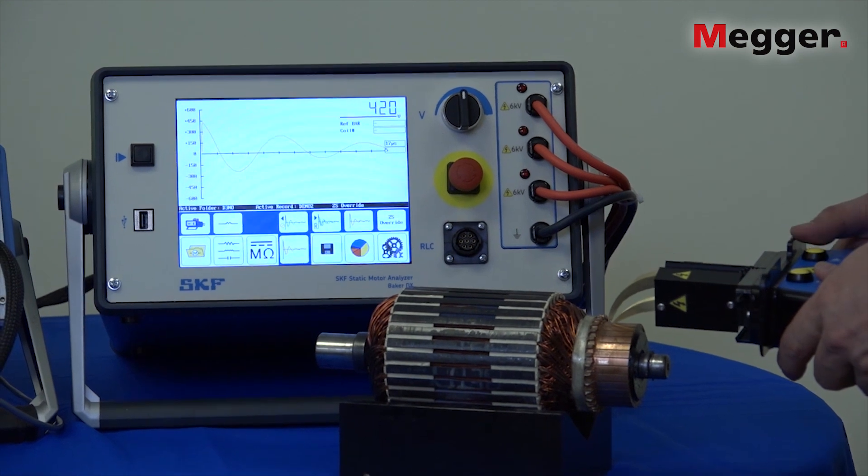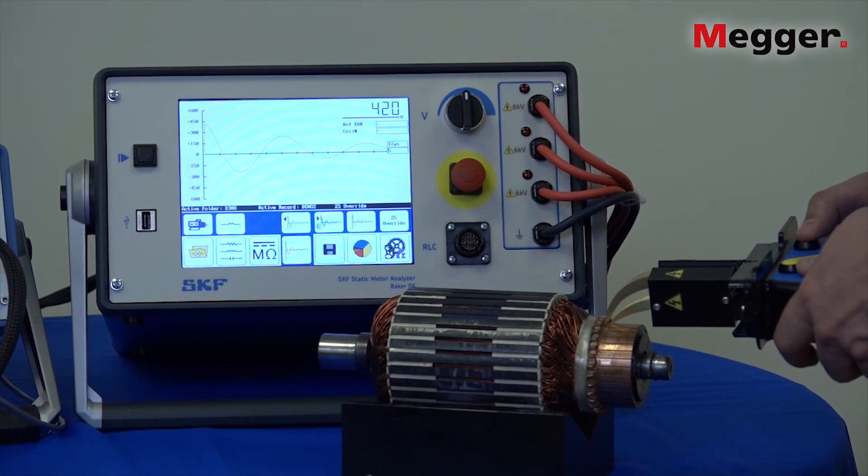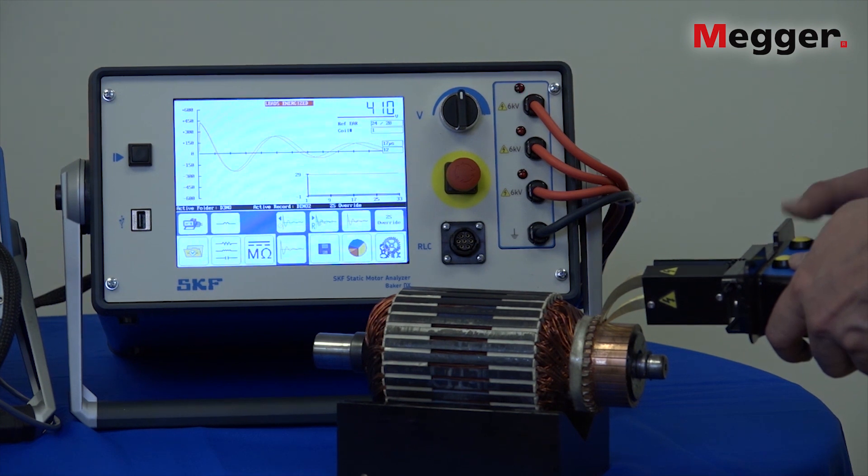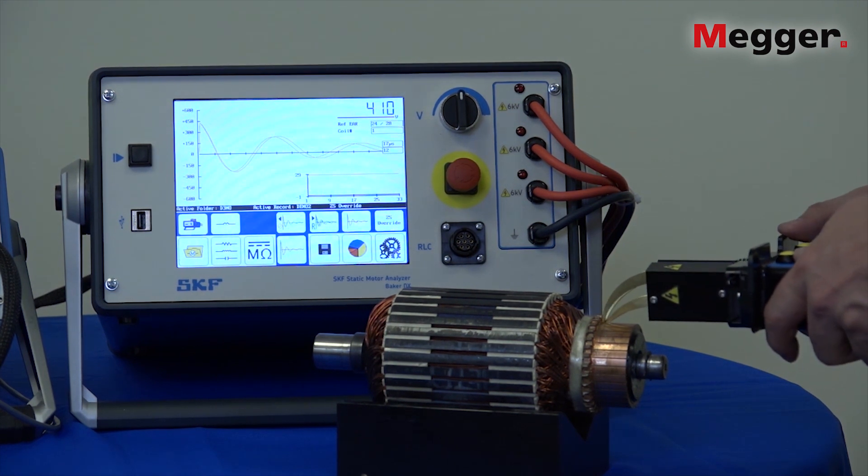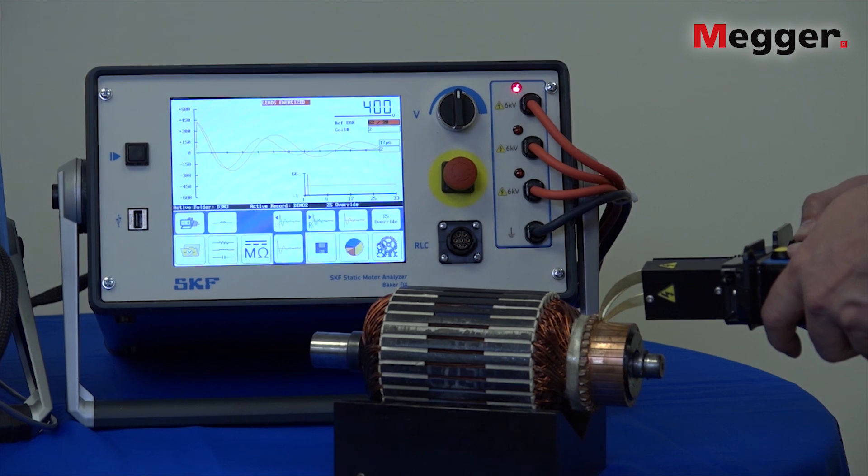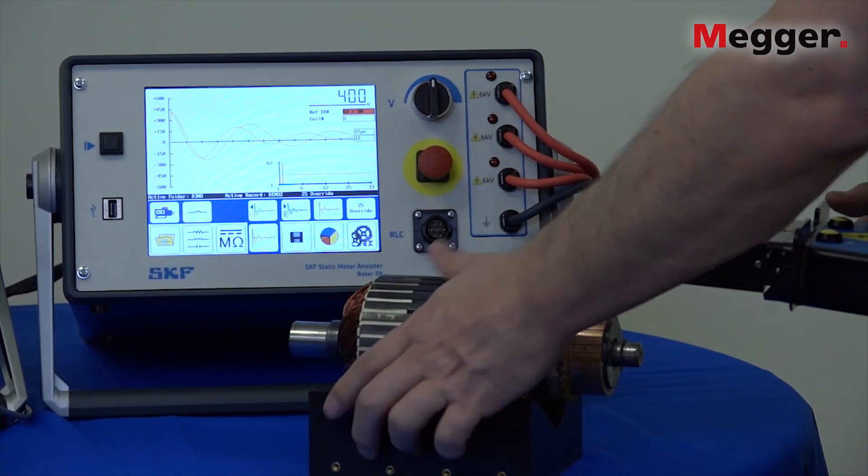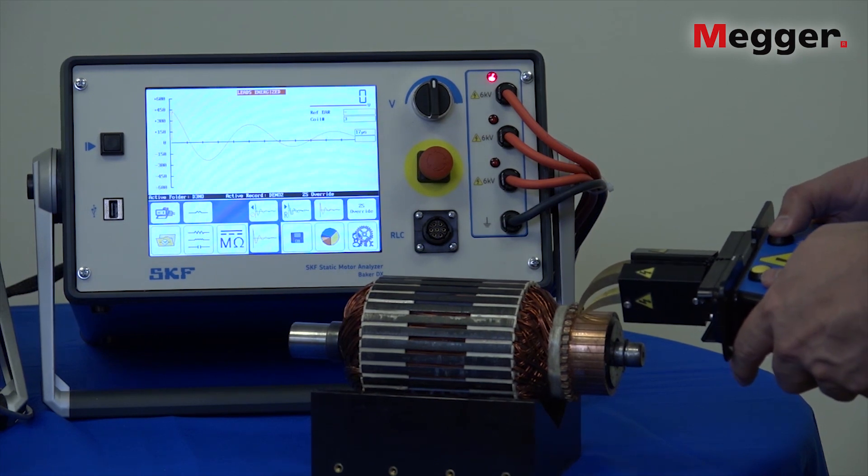So now I'm going to advance my commutator, put my probes down, hit the push to test button, and now we capture the second waveform and now just continue around the armature measuring each bar to bar surge pattern.